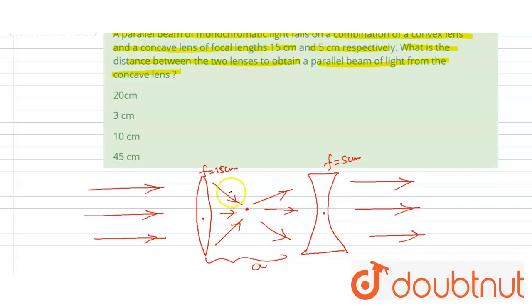Then this distance is 15 cm and this distance is 5 cm, because for this lens the focal length is 15 cm and for this lens the focal length is 5 cm. So the total distance D will be 20 cm. This is one answer.